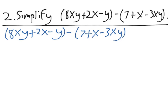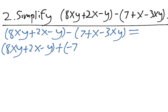Now let's move the minus sign inside of the right term, so we can turn this into a sum. We get 8xy plus 2x minus y plus minus 7 minus x plus 3xy. The two minus signs cancel in the last term.